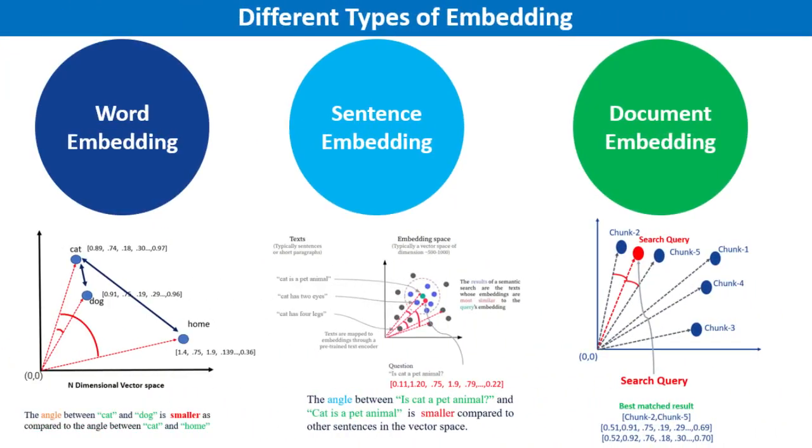Despite our proficiency in language as humans, conveying the same language to machines requires numerical format. You must be curious to learn how machines learn this human language from this numerical format. This is where embedding comes into play. Once textual data is converted into numerical format called tokens, embedding techniques are applied which facilitate these models to learn the relationships between these tokens to understand the human language. There are various embedding techniques which we will be discussing in this course.